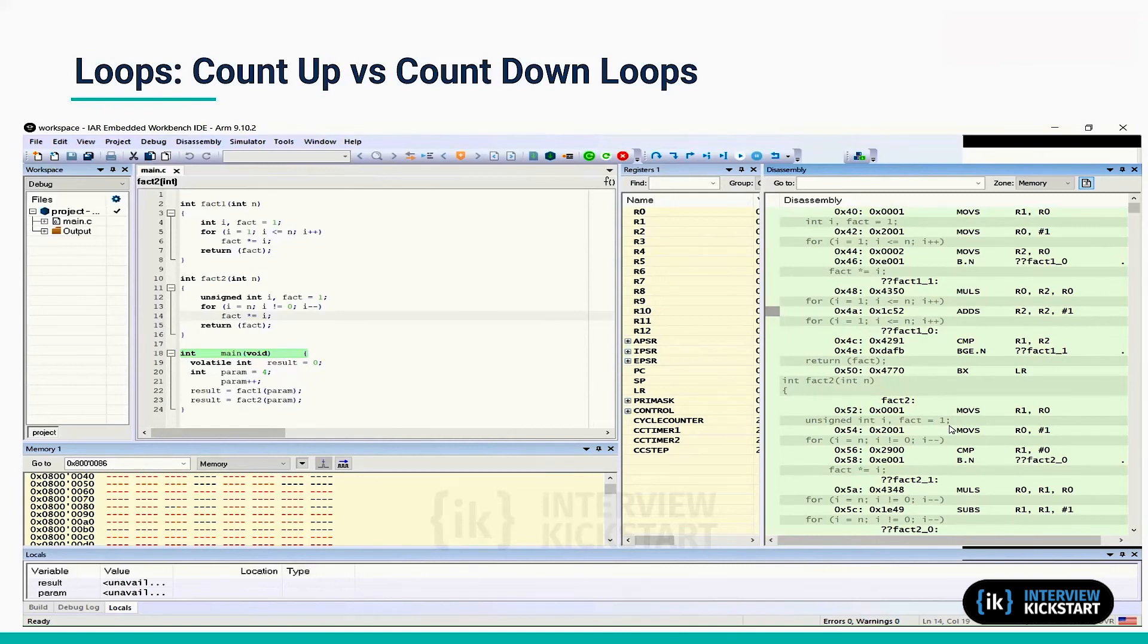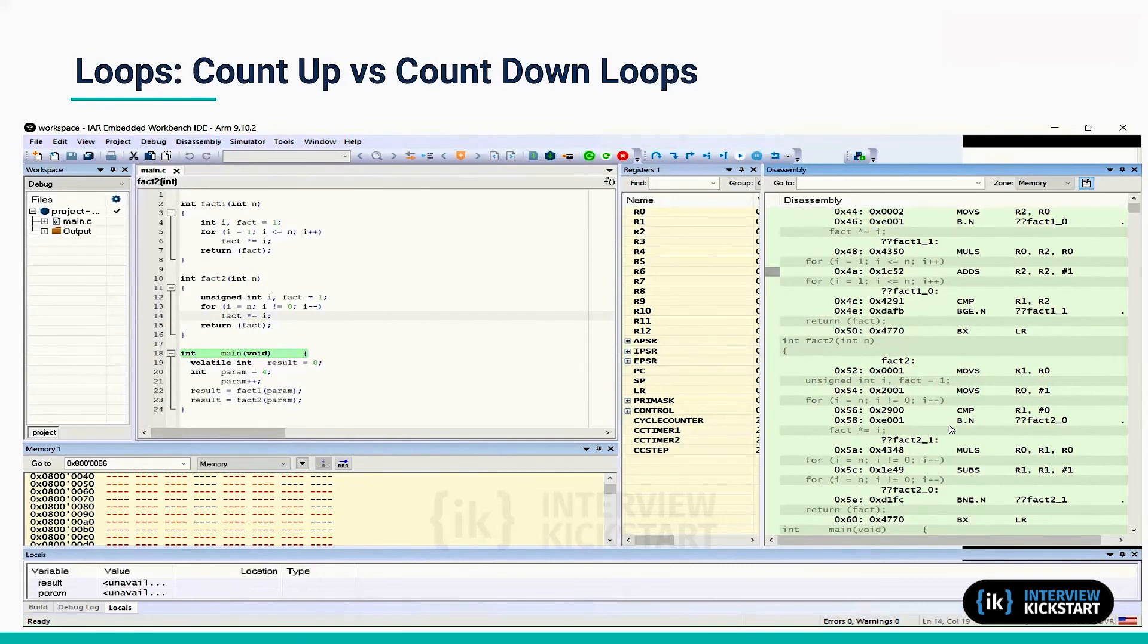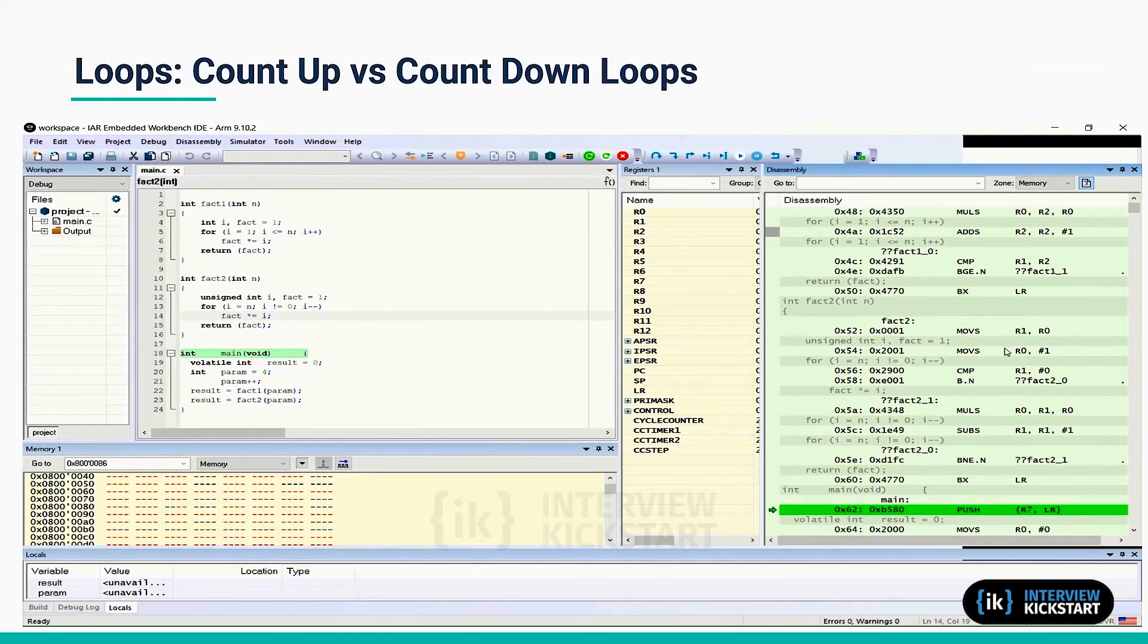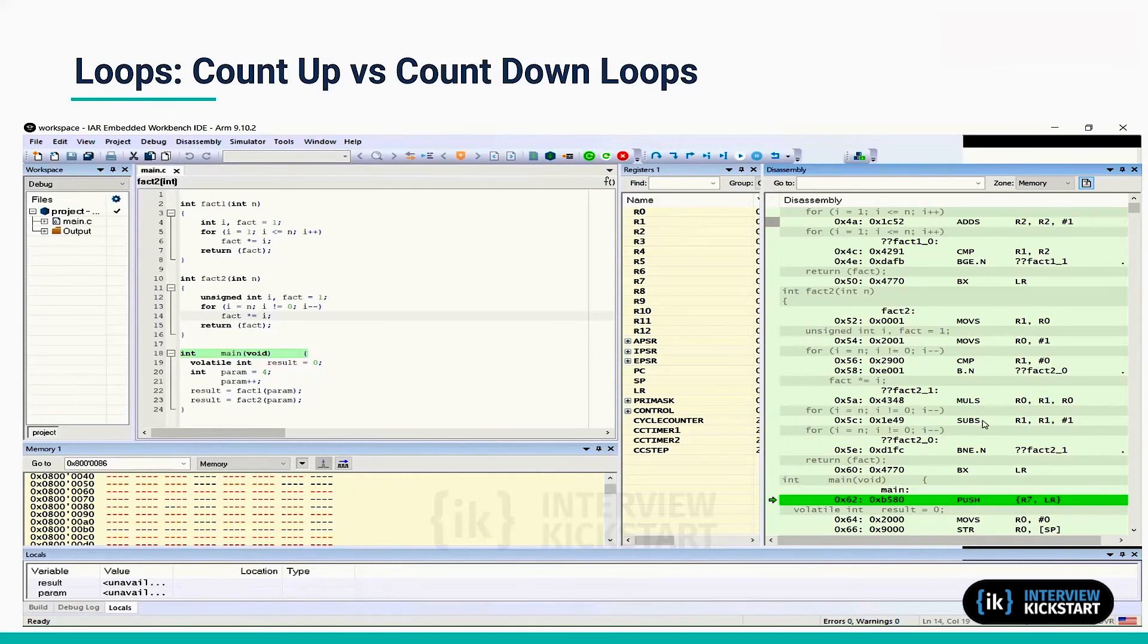So here is the second version factorial 2. Initially, it looks the same. However, after the multiplication, there is a decrement of the index followed by branch on not equal. This is a conditional execution. So there is no comparison operation.